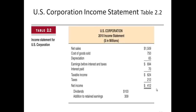Net income is what's left over after you've paid off your suppliers, depreciated your equipment, paid your interest payments, paid your taxes, etc. Once you have this amount of net income, you have to decide what to do with it — do we pay it as dividends, or do we add it to retained earnings?